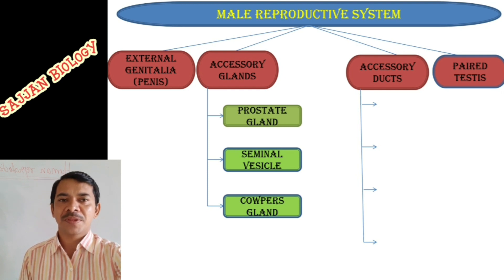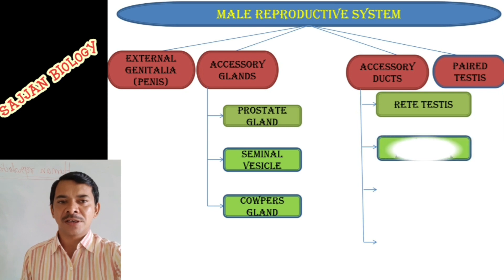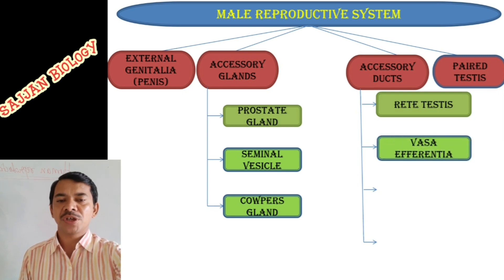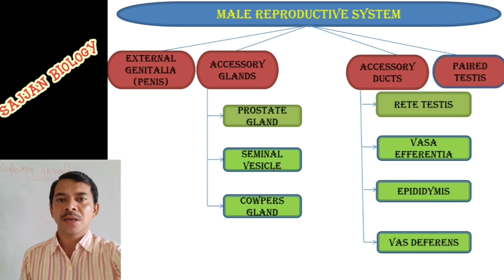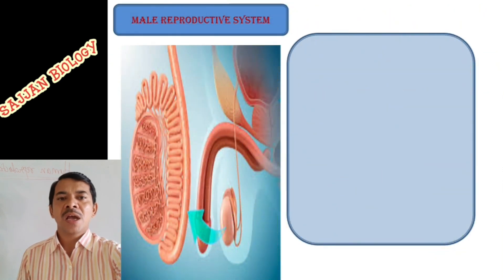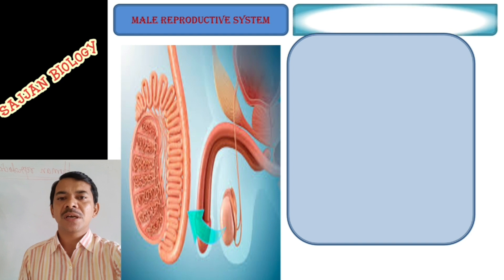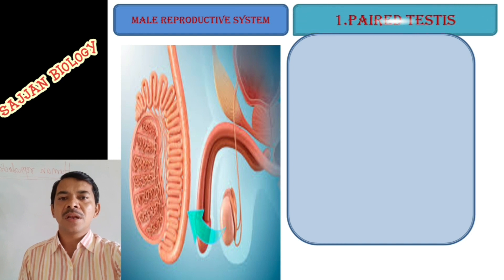The accessory ducts are: rete testis, vas efferentia, epididymis, and vas deferens — four important accessory ducts. Next is the paired testes, and here we discuss in general about the structure and anatomy of the testes.